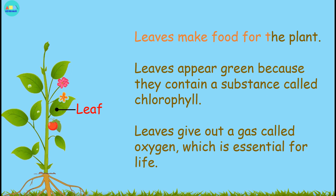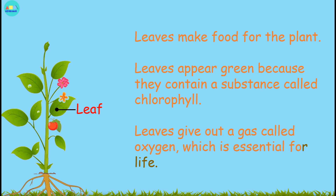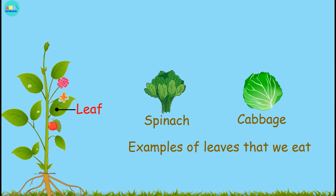Leaves make food for the plant. Leaves appear green because they contain a substance called chlorophyll. Leaves give out a gas called oxygen, which is essential for life. Spinach and cabbage are examples of leaves that we eat.